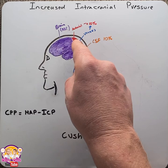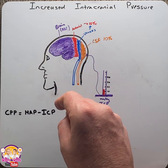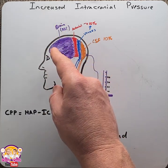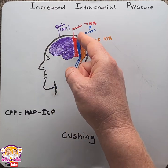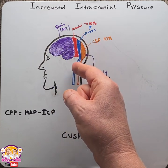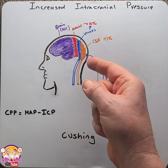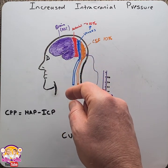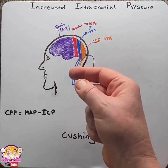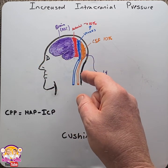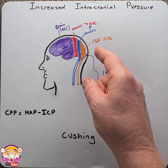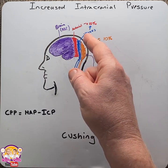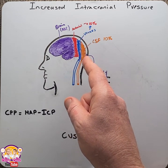Some causes of an increase in one of these volumes would be: for brain tissue, a tumor or a blood clot; for blood, the venous component would be a decrease in venous drainage seen in cases of heart failure, or an increase in arterial blood supply in cases of hypercapnia; and in cases of increased CSF, this could be an increase in CSF production or a decrease in CSF drainage.